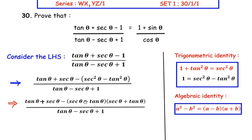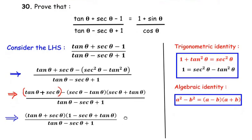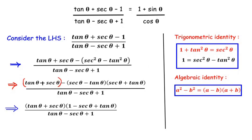We can now factorize the numerator. In the numerator we have (tan θ + sec θ), and the same term (sec θ + tan θ) appears in the second part, so we take (tan θ + sec θ) as a common factor. After factoring out, we are left with: (tan θ + sec θ)(1 − sec θ + tan θ) over the denominator.